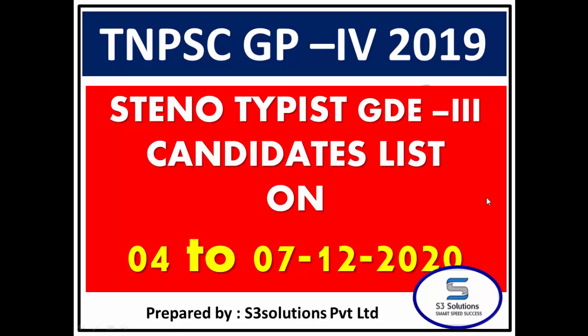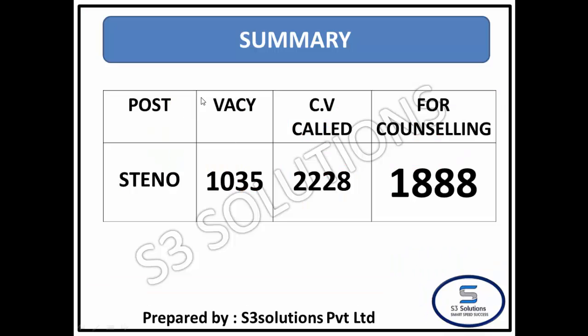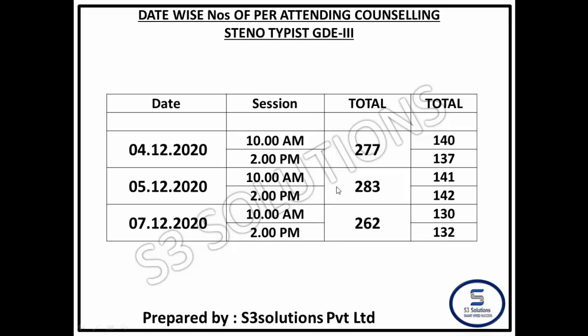As usual, we are going to talk about the summary. We are going to cover General, MBC, BC, SC, and ST categories. The dates covered are 4th December, 5th December, and 7th December candidate lists.